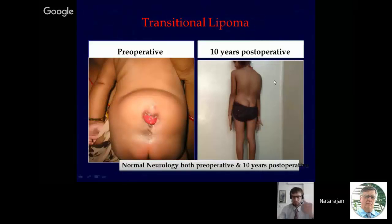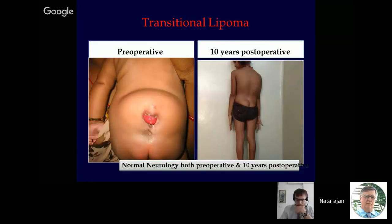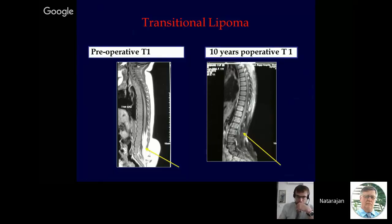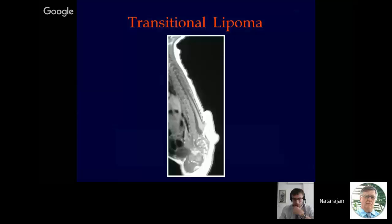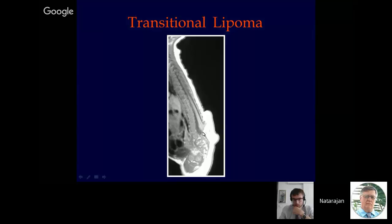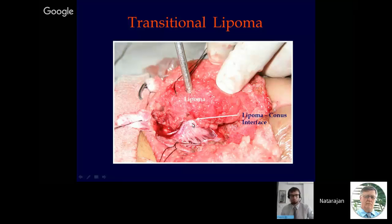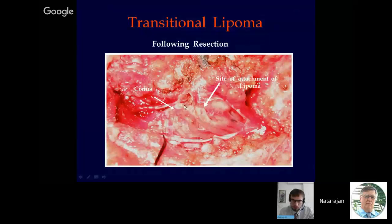This is the same child, 10 years postoperatively. The child is neurologically normal except for radiologically developing mild scoliosis, which is not evident much clinically. The pre-op and 10-year post-op T1-weighted images show no evidence of either retethering or residual lipoma, and T2 images confirm total excision. Another example of a transitional lipoma: notice the extra-thecal lipoma that passes inside and is adherent both to the caudal and dorsal aspect of the conus medullaris. The nerves are taking off ventral to the lipoma-conus interface, and this is following excision of the lipoma.